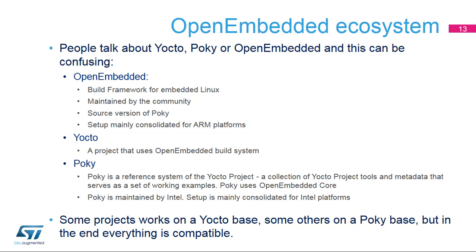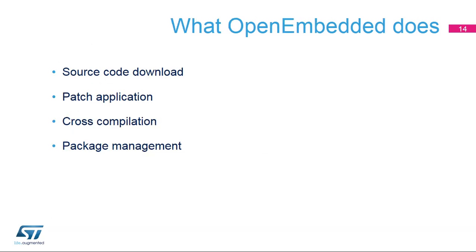Poky uses OpenEmbedded core and is maintained by Intel, with its setup mainly consolidated for Intel platforms. Some projects work on a Yocto base, some others on a Poky base, but in the end everything is compatible. OpenEmbedded may be seen as a powerful yet quite complex build framework. The main actions OpenEmbedded performs during a compilation — most defined in files named Recipes — include: downloading source code from various repositories, applying patches to the source code, and cross-compiling this modified source code to prepare ready-to-deploy images.